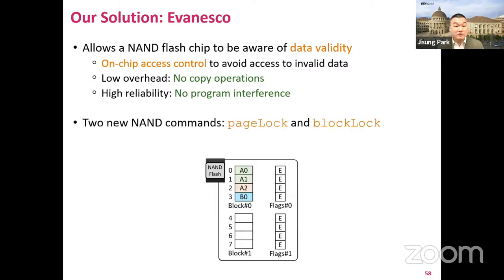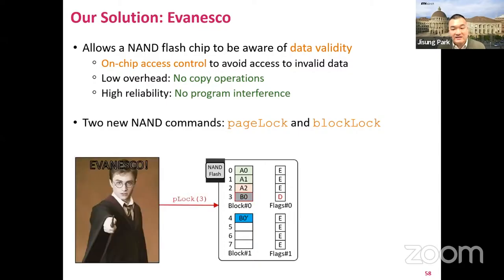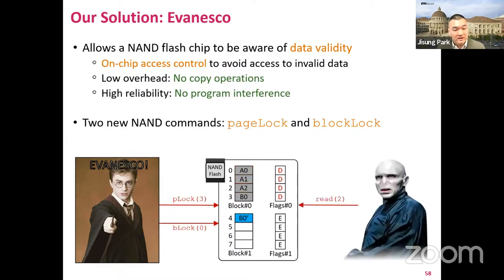To this end, we propose two new NAND flash commands: page-lock and block-lock, or P-Lock and B-Lock in short, respectively. To sanitize a page, the SSD firmware sends a P-Lock command that disables the page's access permission flag inside the NAND flash chip. If a block needs to be sanitized, the B-Lock command disables all the pages in the block. Even if an adversary directly accesses the raw flash chip, the chip just returns dummy data — all zeros — for any access to an invalid page.